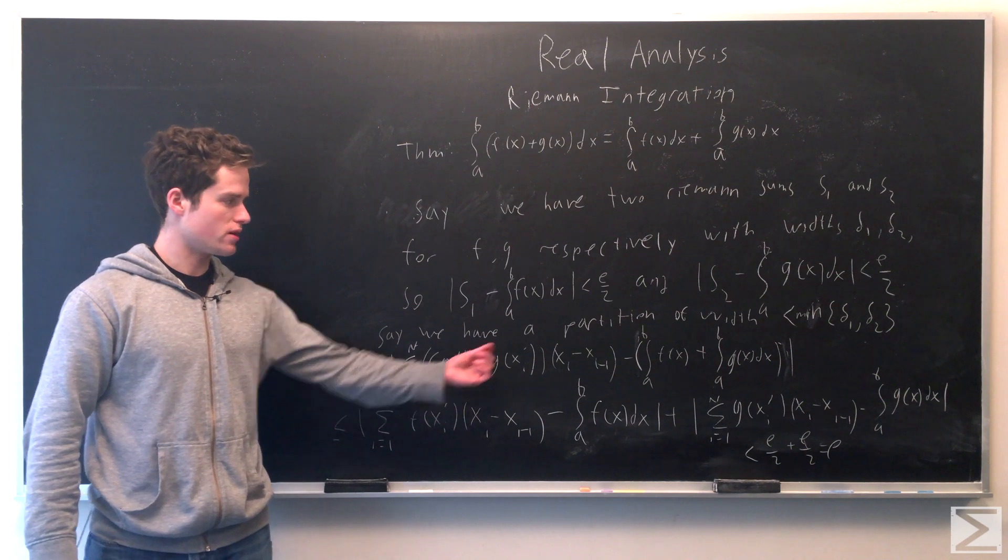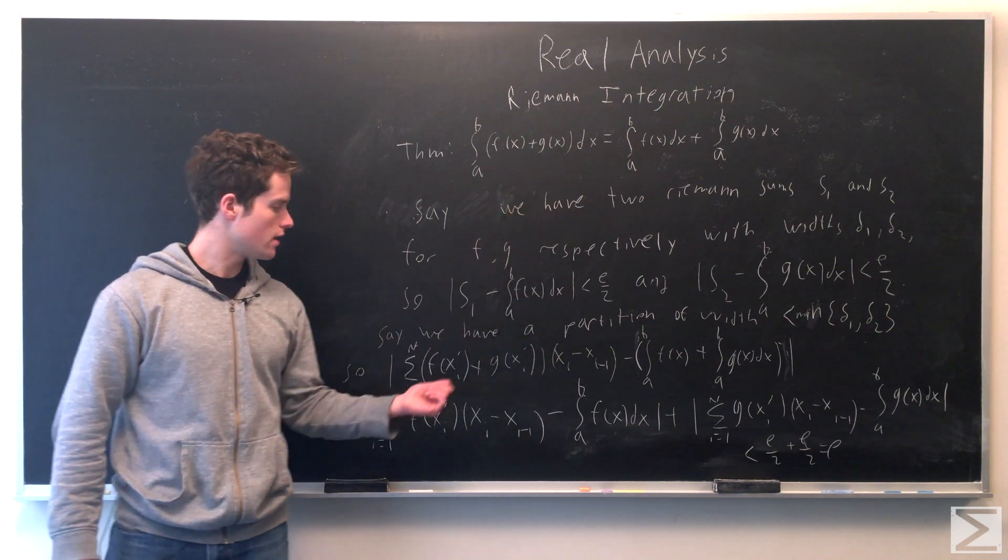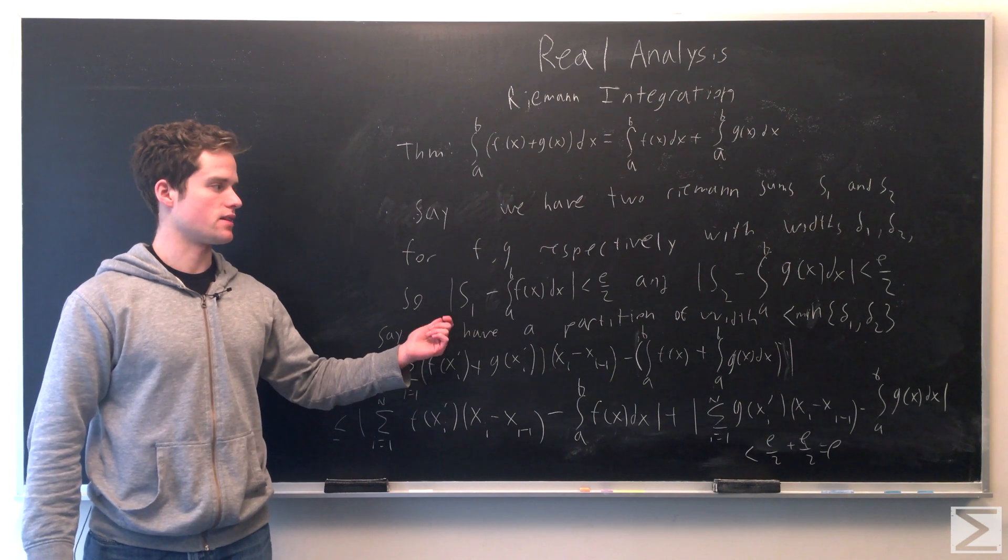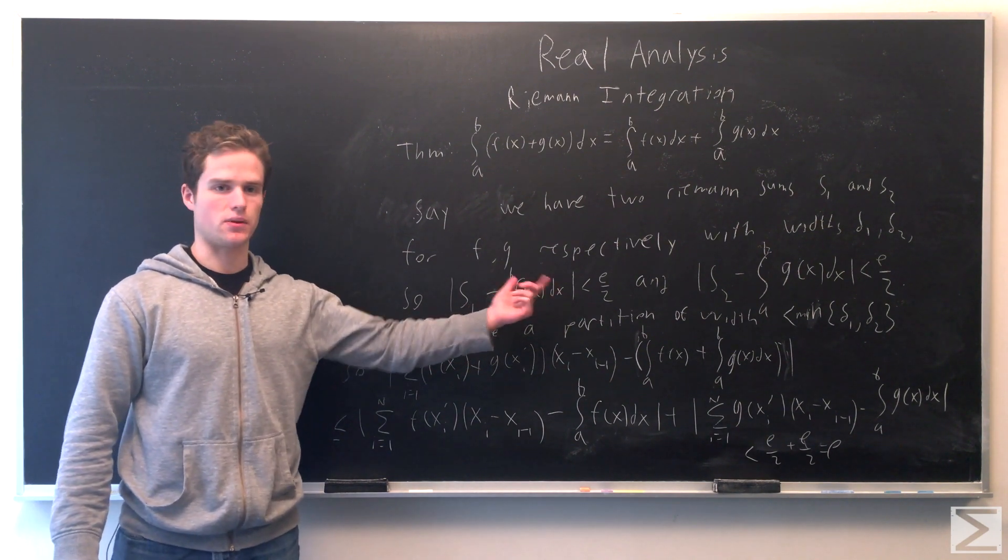We want to show this gets as close as we want to the thing on the right side. We're picking our partition to be of width less than the minimum of δ₁ and δ₂, so both our inequalities apply.